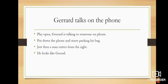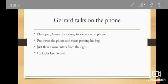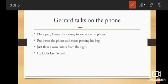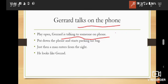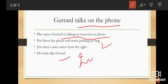The play begins with Gerrard talking to someone on the phone. As he puts down his phone, he starts packing his bag, which shows he is about to leave the place. Just then a man enters from the right who looks somewhat like Gerrard. He was the intruder.